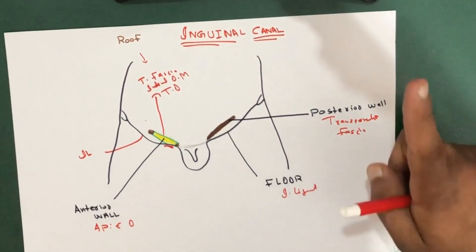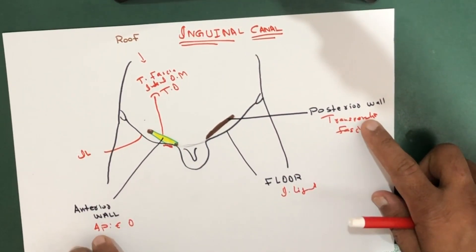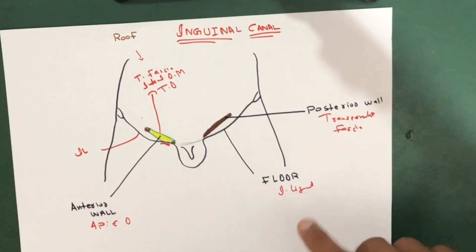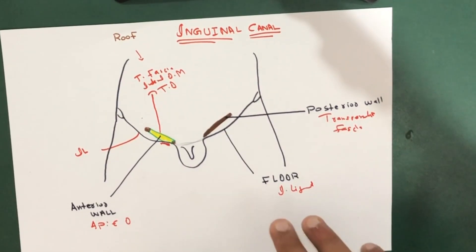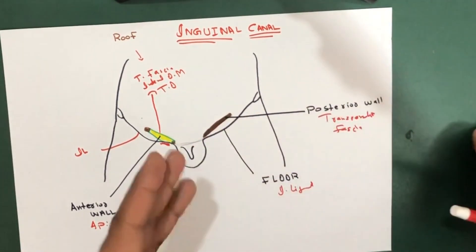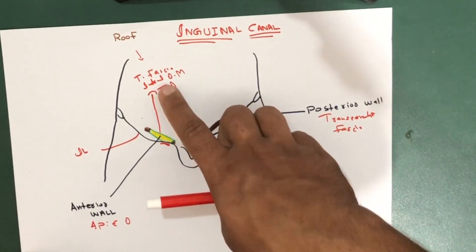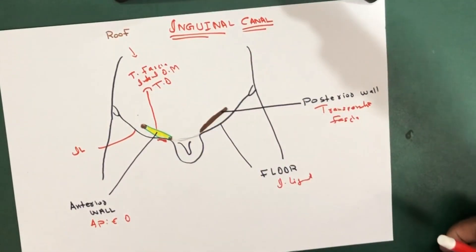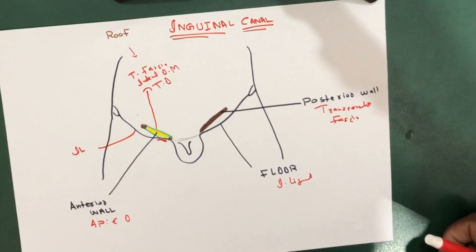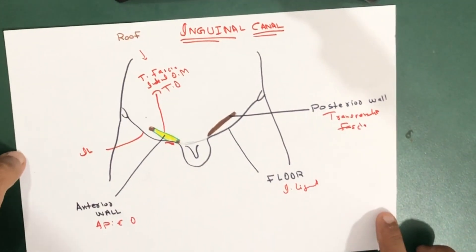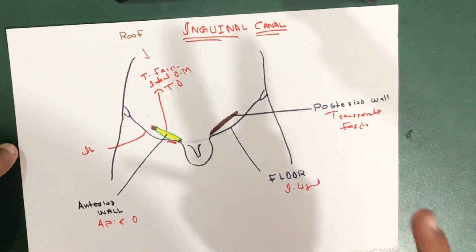So to summarize the boundaries: the posterior wall has only one structure, the anterior wall also has one main structure, the floor mainly has one, but the roof has three structures — transversalis fascia, internal oblique muscle, and transversus abdominis. Now let's talk about the openings.